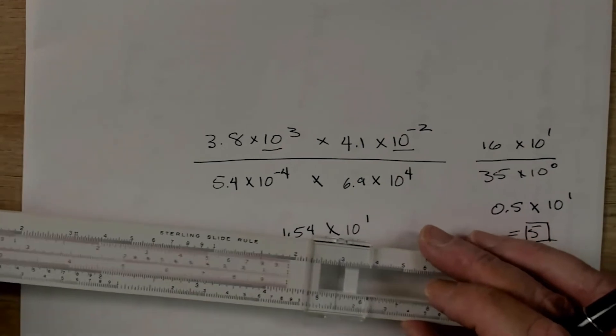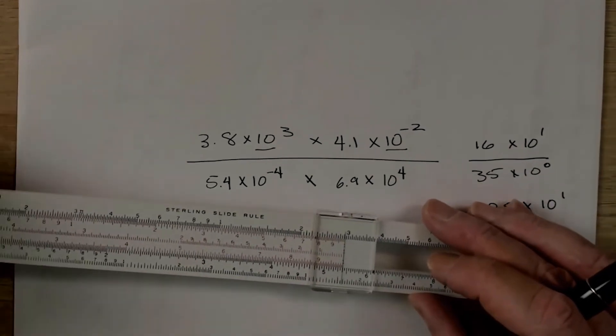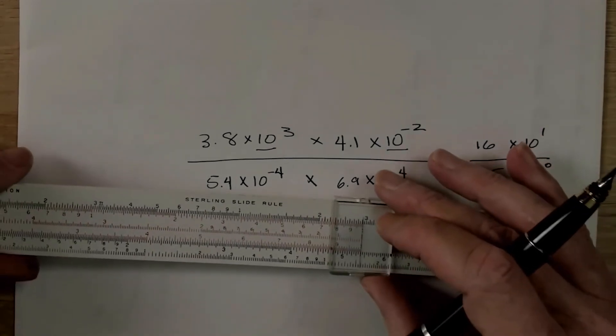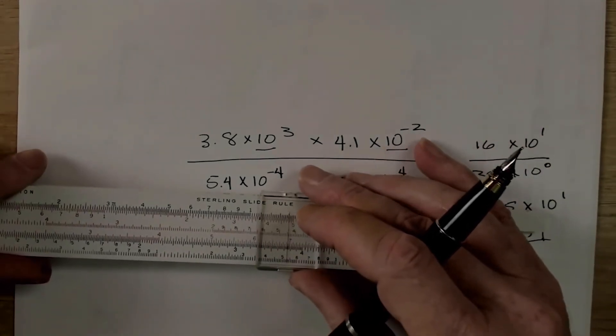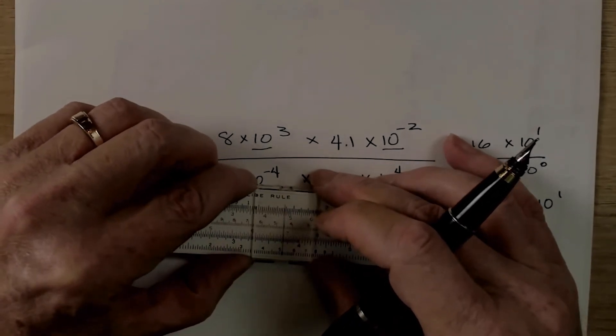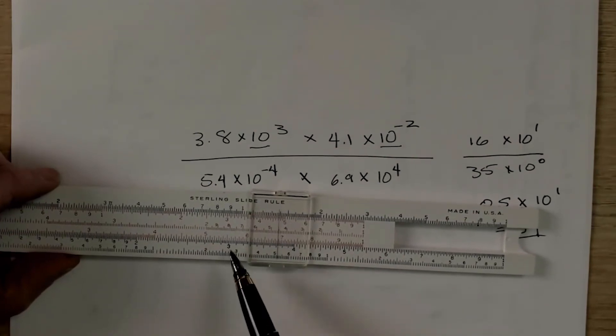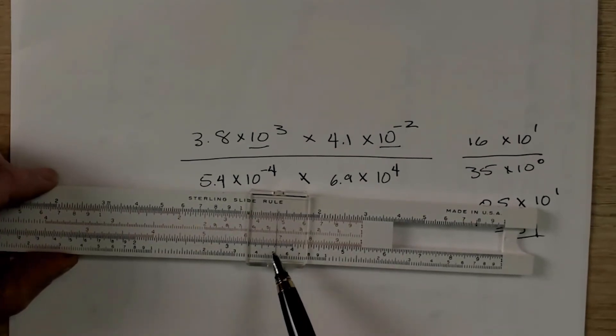So, we're going to find 5.4. And that's right there. And then we're going to multiply it by 6.9. So, we need to put this index over that 5.4 and come out here to 6.9.